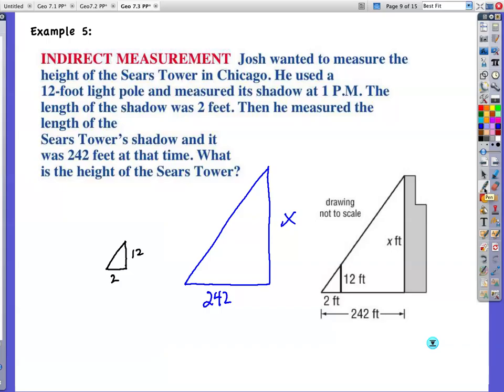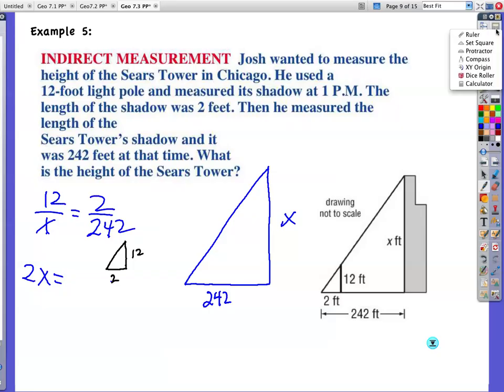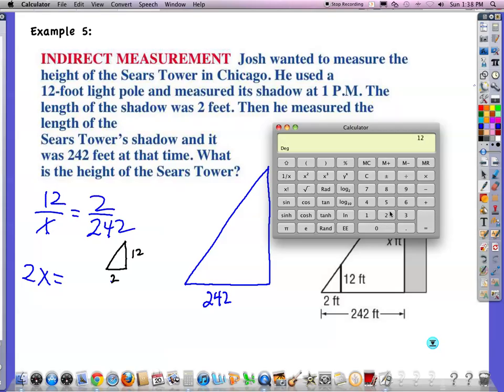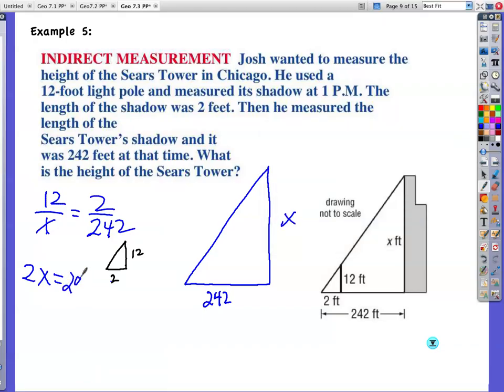So now I'll have to do a set up of proportion. Twelve is to X as two is to two forty-two. So I went small, upright to large, upright, small, shadow to large, shadow. Cross-multiply. Two X is the same as whatever twelve times two forty-two is. Looks like 2,904. And then divide both sides by two. So I have X is equal to one, four, five, two. One thousand, four hundred and fifty-two.